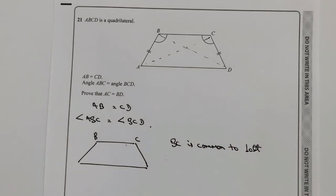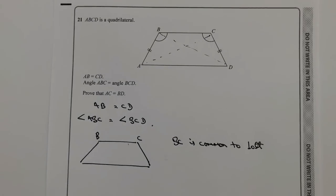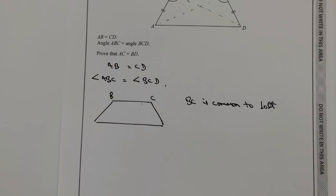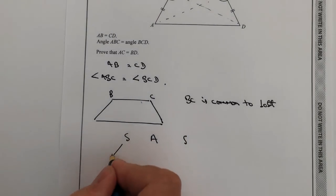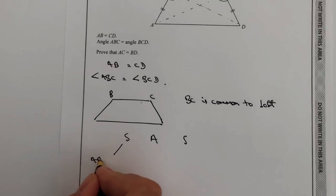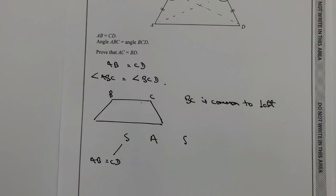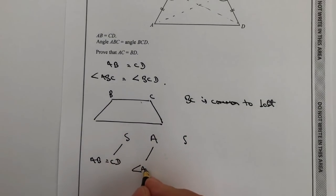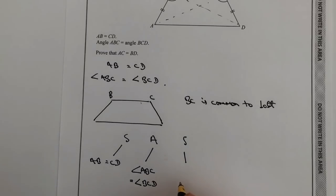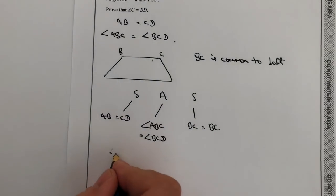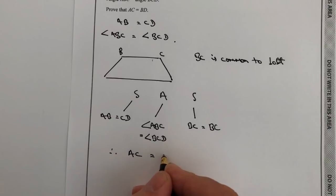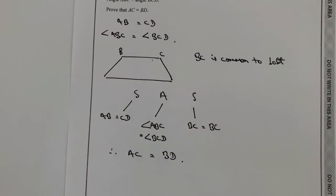This is a fairly straightforward proof using side-angle-side. We have: AB equals CD (given), angle ABC equals angle BCD (given), and BC equals BC (common to both). From those three conditions — side, angle, side — we can say that the triangles are congruent, and therefore line AC equals line BD.